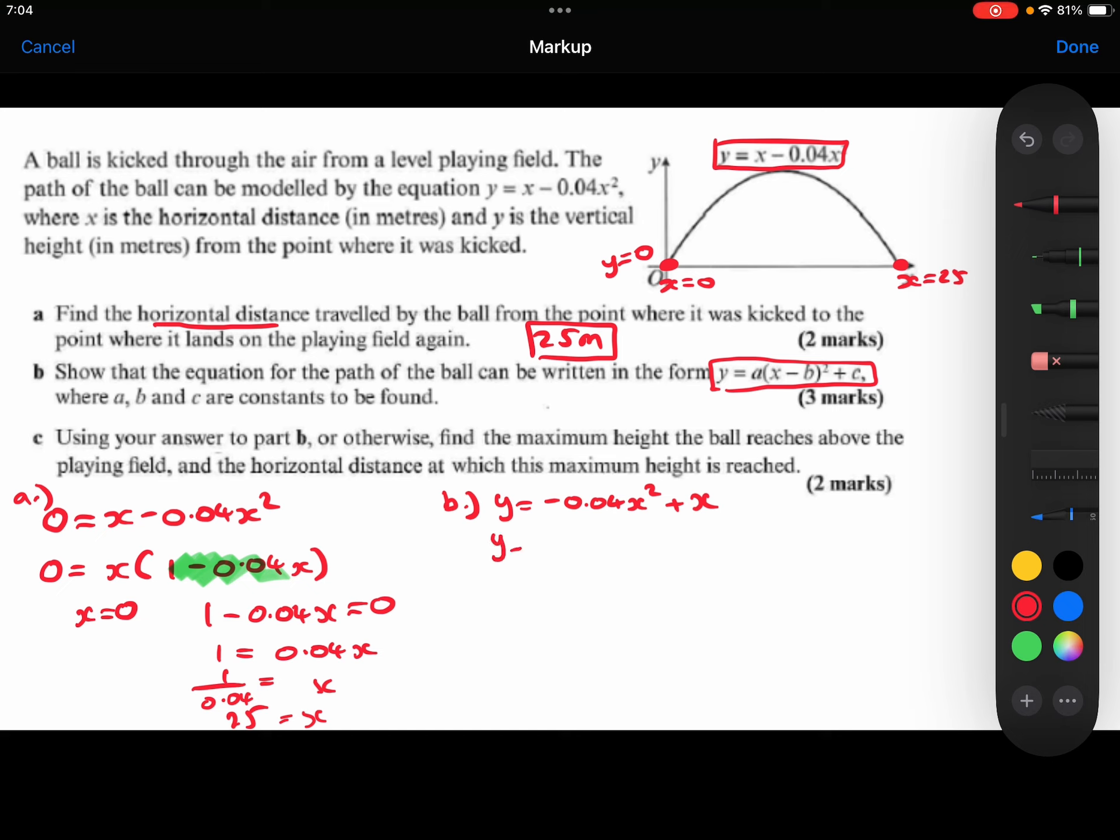I'm then going to factorize the minus 0.04 outside, so that I now just have the x squared term with a coefficient of 1. So just being super careful with your factorizing, this times this gives me this, and then this times this gives me this.